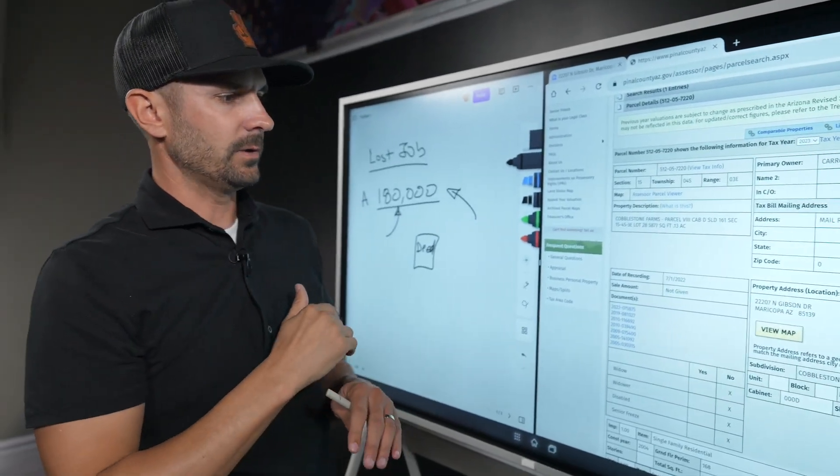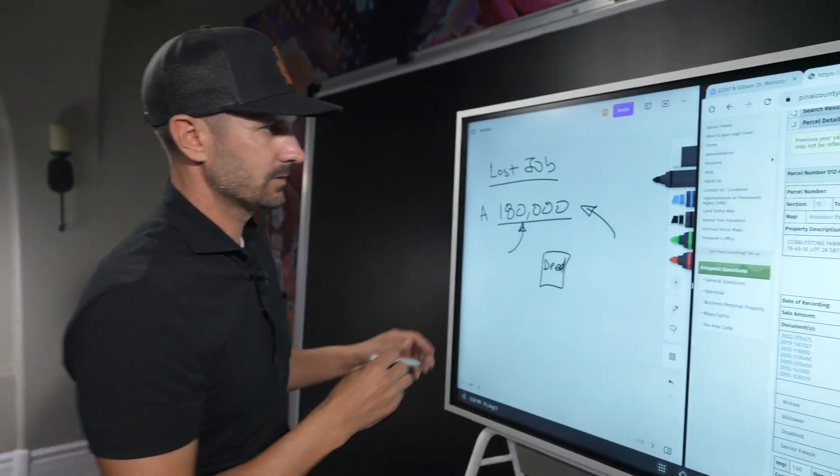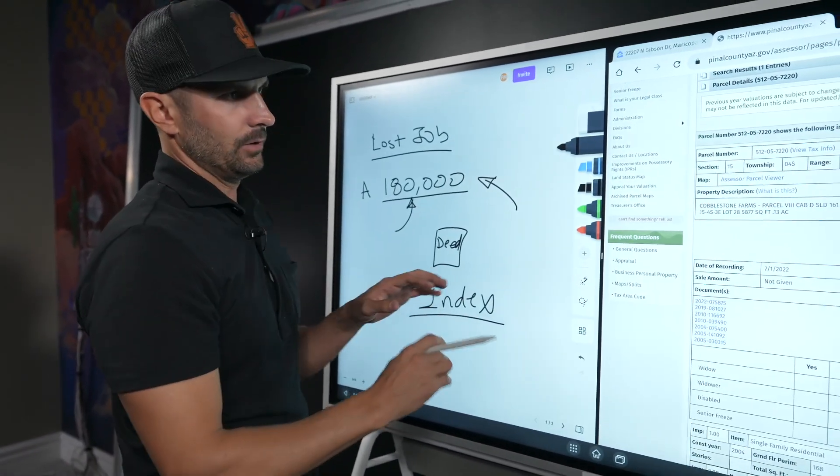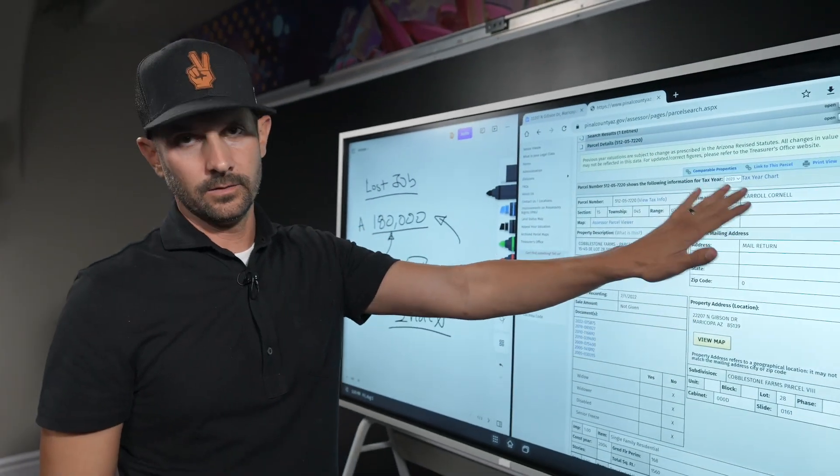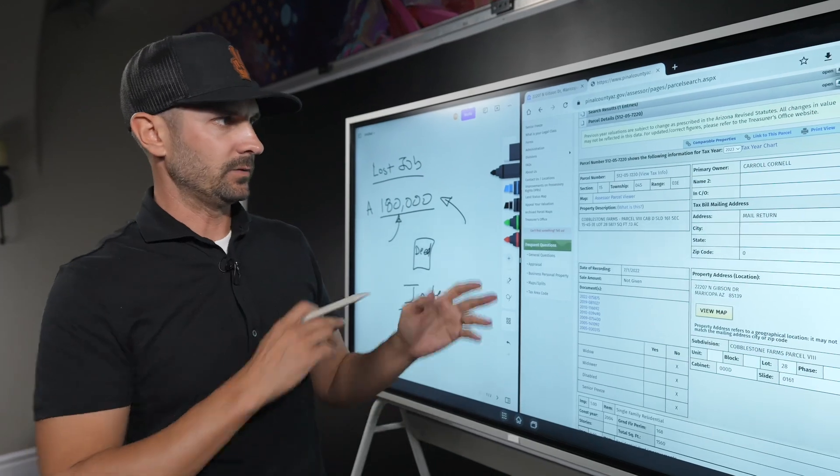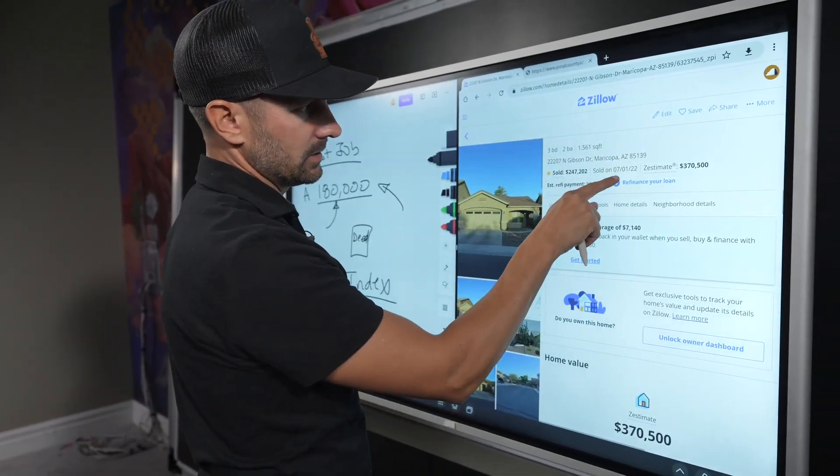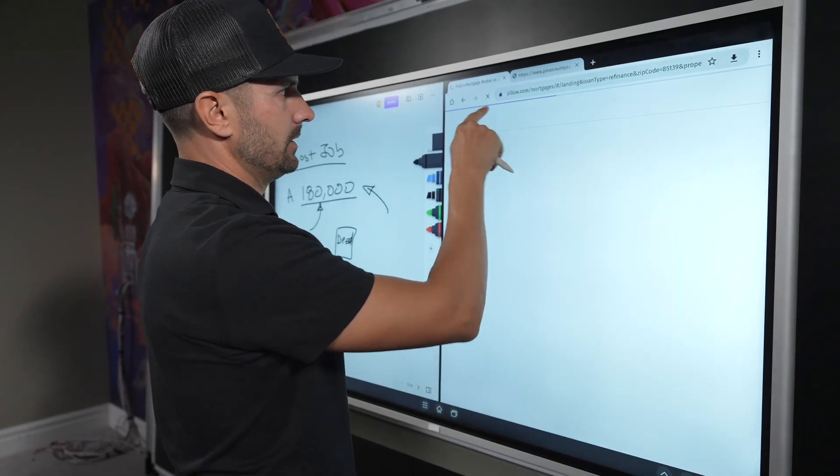So it's pretty easy, guys. Owner's name, property address. This is the previous owner. Primary owner shows Carol Cornell. So even though we've recorded at the county, the county sometimes takes a couple of days to index.